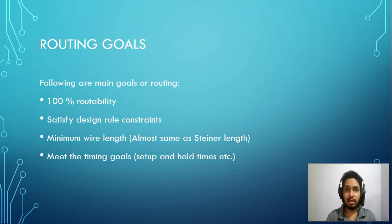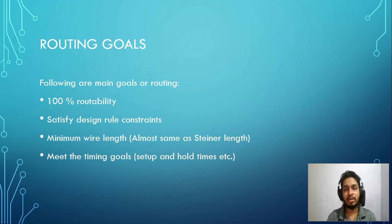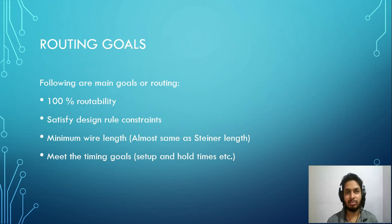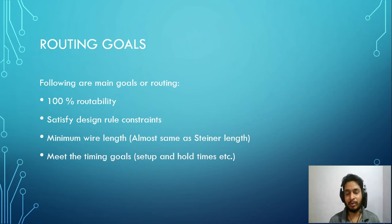The third goal is minimum wire length. We could route a connection between two blocks with 10 or 20 microns, but what we want to achieve is the minimum wire length to reduce delay. Steiner length is very similar — it is the minimum length with which we can route any two nodes in graph theory. We try to match it as closely as possible. Lastly, we must meet timing goals such as setup and hold time checks, without which the chip won't work functionally.